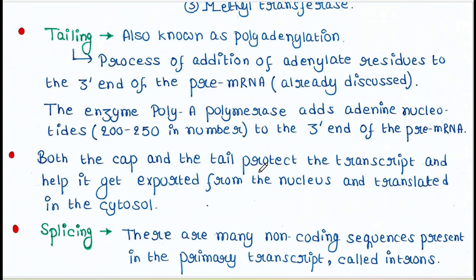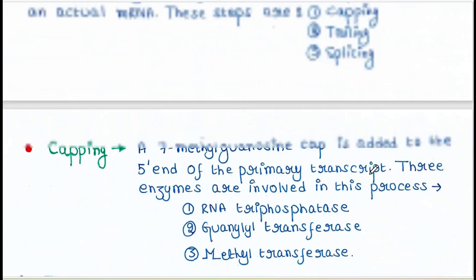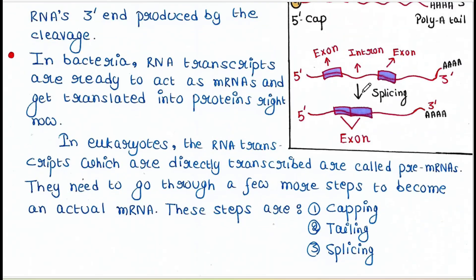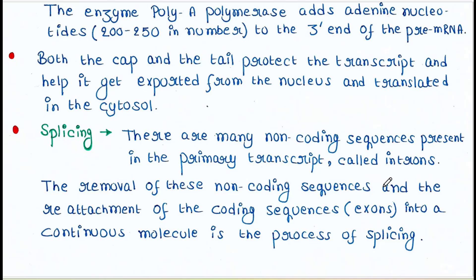Both the cap and the tail protect the transcript and help it get exported from the nucleus to the cytoplasm, where the mRNA will be translated. The third step is splicing. There are many non-coding sequences present in the primary transcript called introns, and the removal of these non-coding sequences with reattachment of the coding sequences into a continuous molecule is the process of splicing.